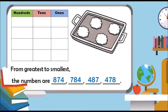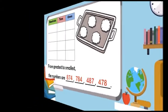From greatest to smallest, the numbers are eight hundred and seventy-four, seven hundred and eighty-four, four hundred and eighty-seven, four hundred and seventy-eight.